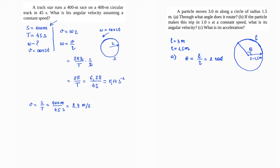Part B: if the particle makes this trip in 1 second at constant speed, what is its angular velocity? We need to find omega given T equals 1 second.